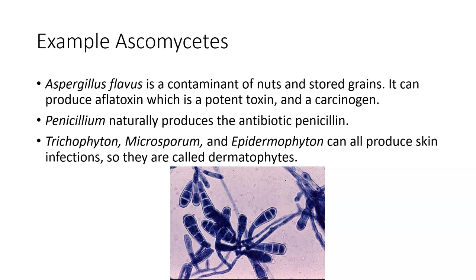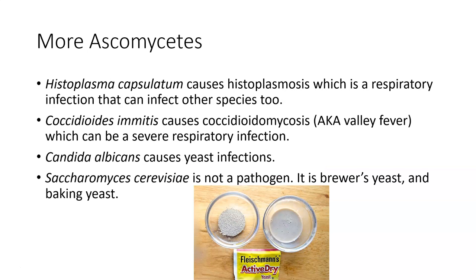Penicillium is the genus that produces penicillin, the antibiotic. Trichophyton, Microsporum, and Epidermophyton are all dermatophytes, which means they cause skin infections. Ringworm is an example of a dermatophyte infection. Histoplasma capsulatum causes histoplasmosis — you don't see that very often, but if you are a caver or hang around in places where bats tend to go, you can get histoplasmosis, which is a respiratory infection.